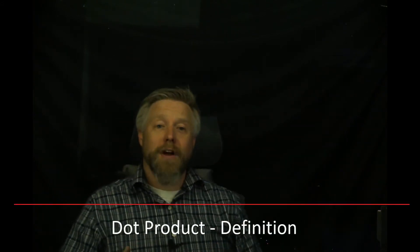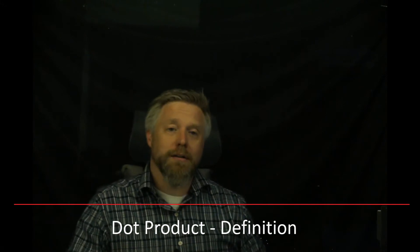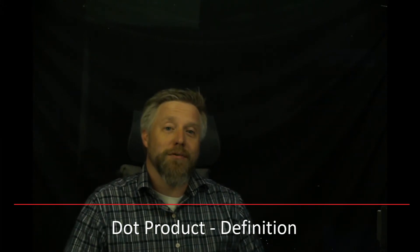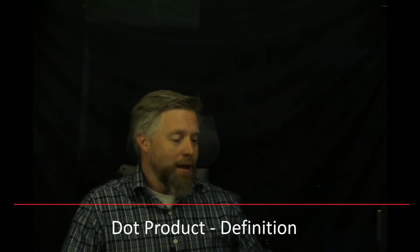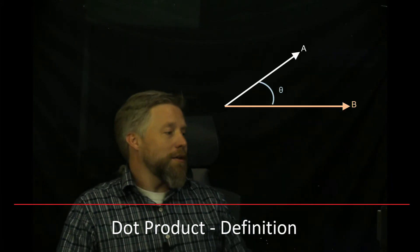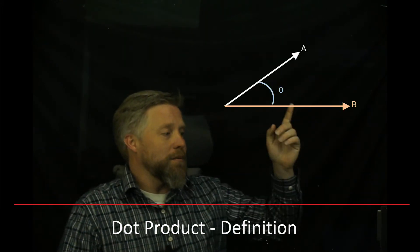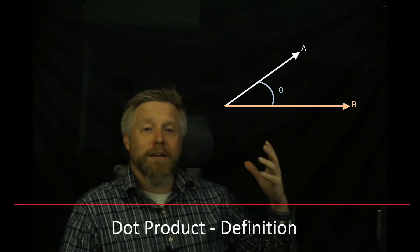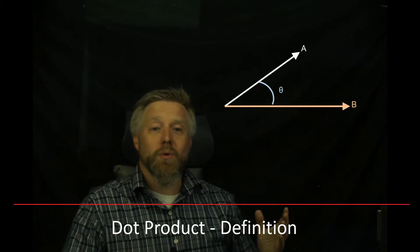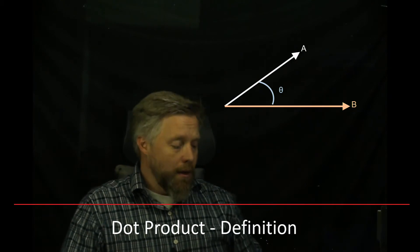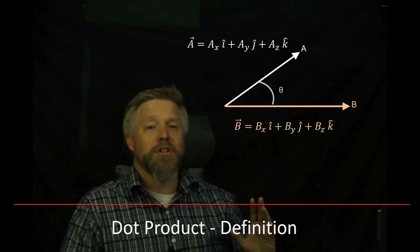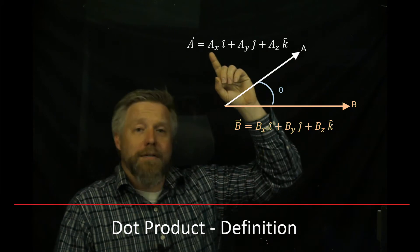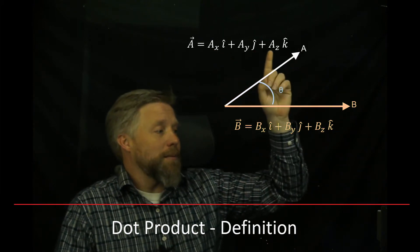We're going to start off by defining the dot product — it should be review, you've probably seen it in previous classes. We're going to have a couple of vectors, vector A and vector B, separated by an angle theta. These vectors could be in 2D or 3D, and we're going to define them in the most generic way, with components in the i, j, and k directions.